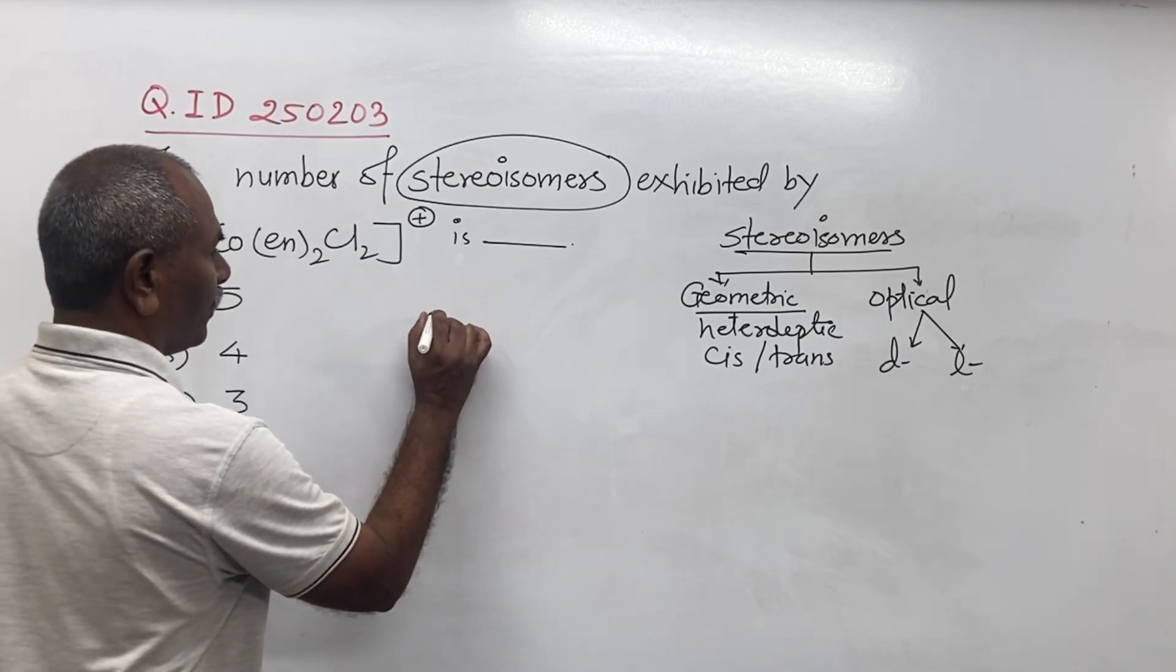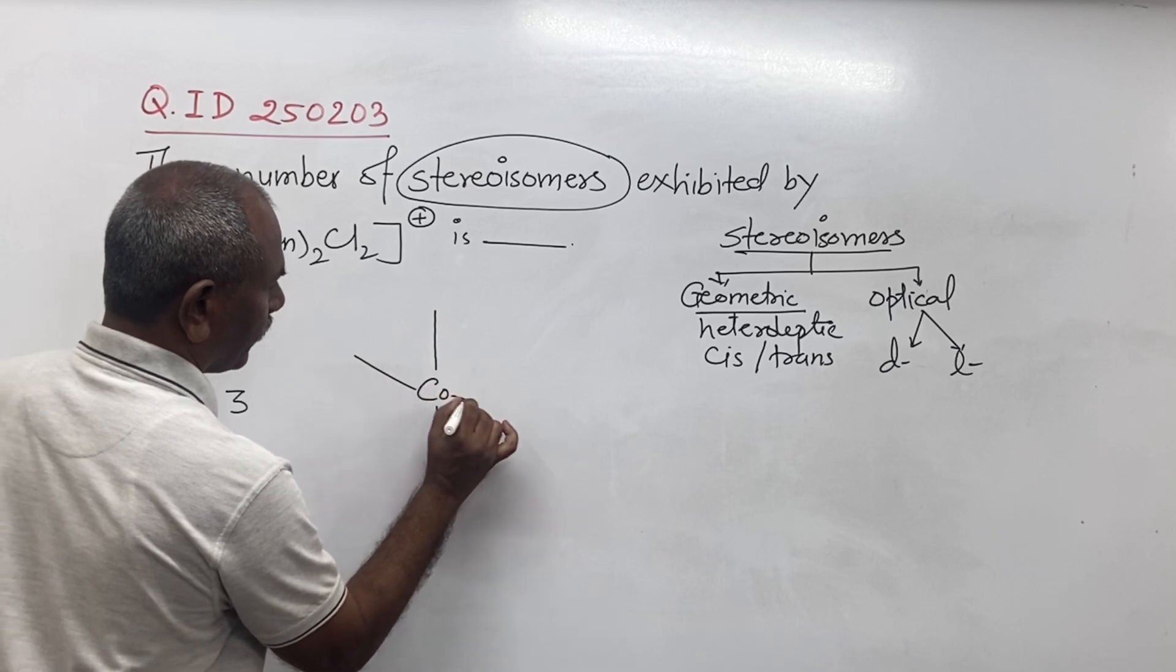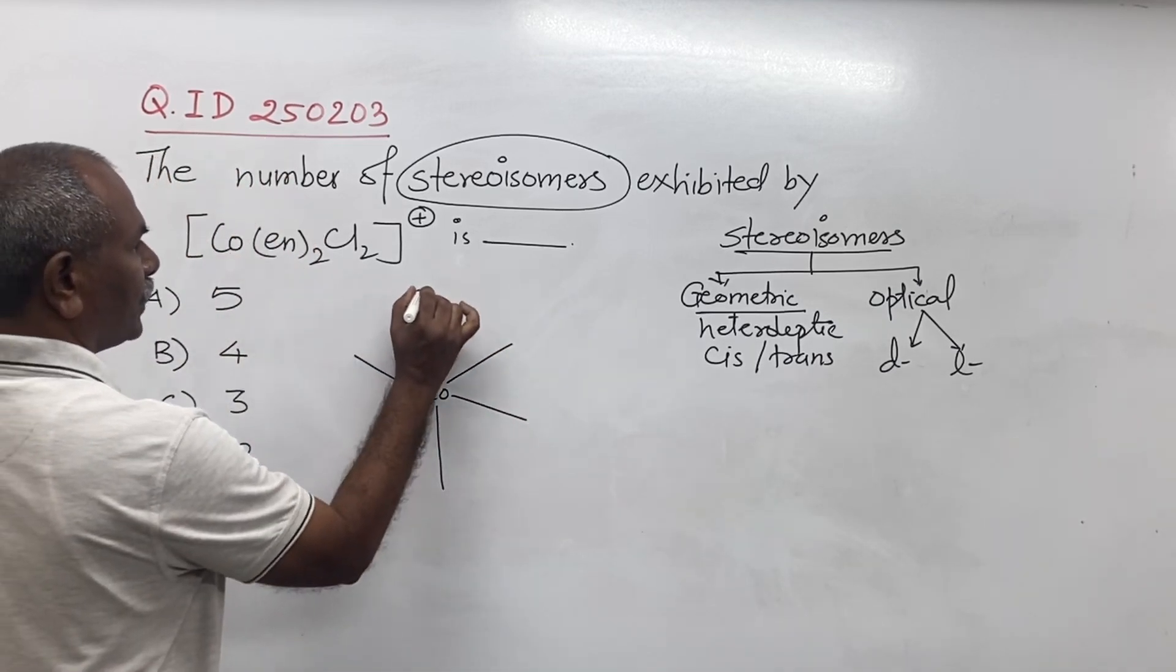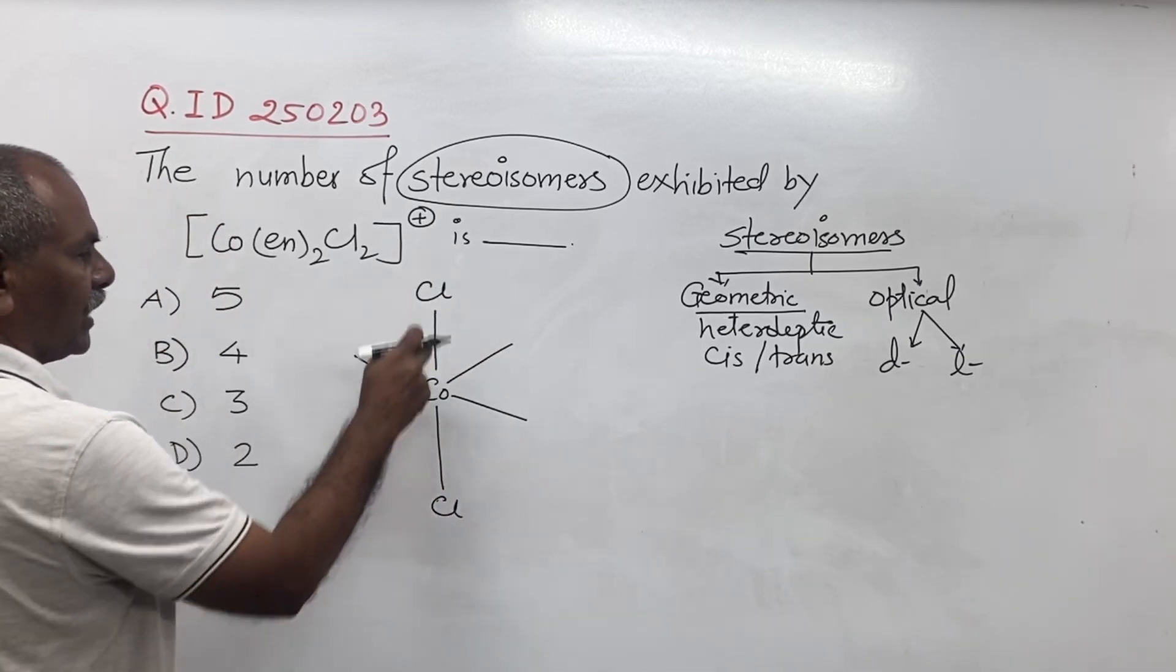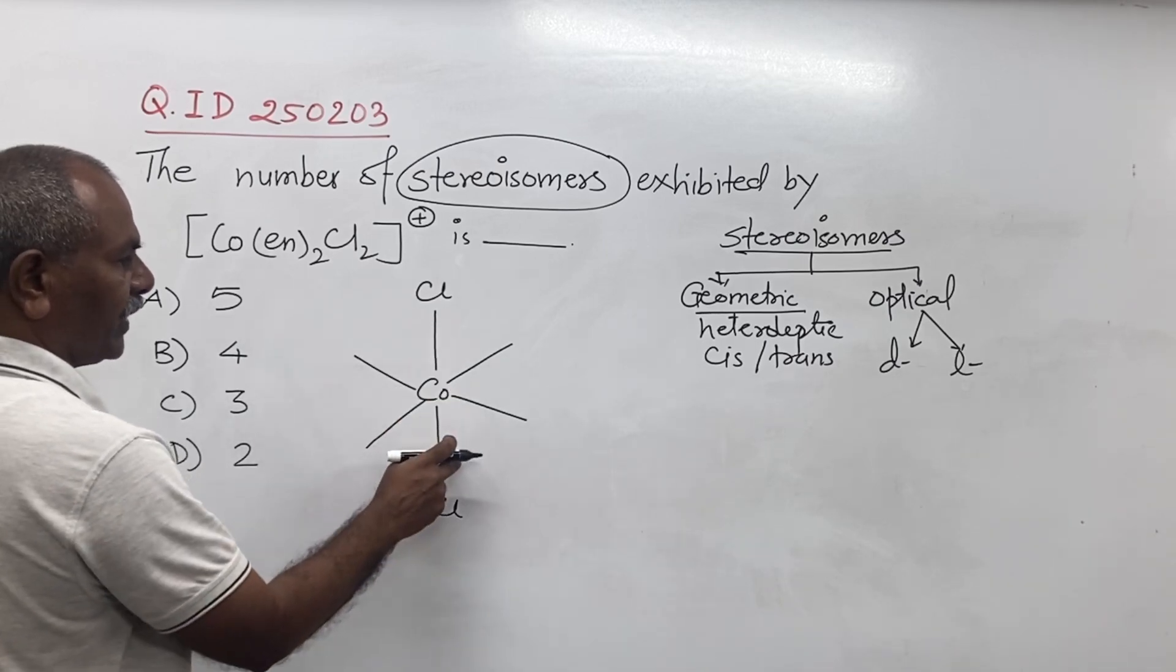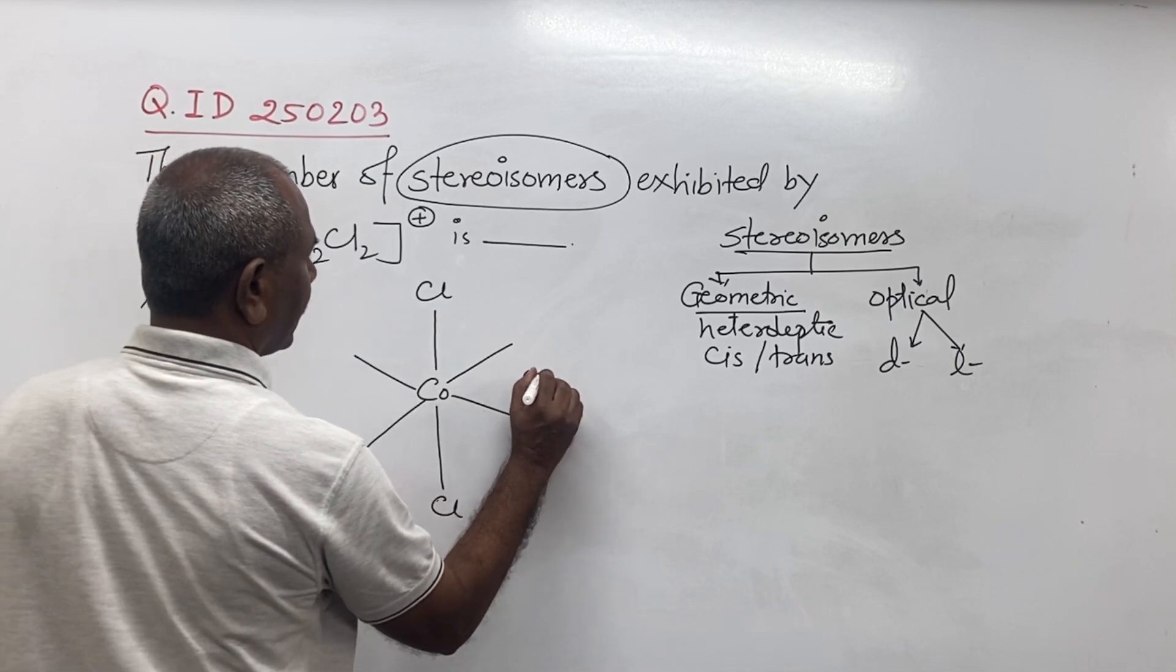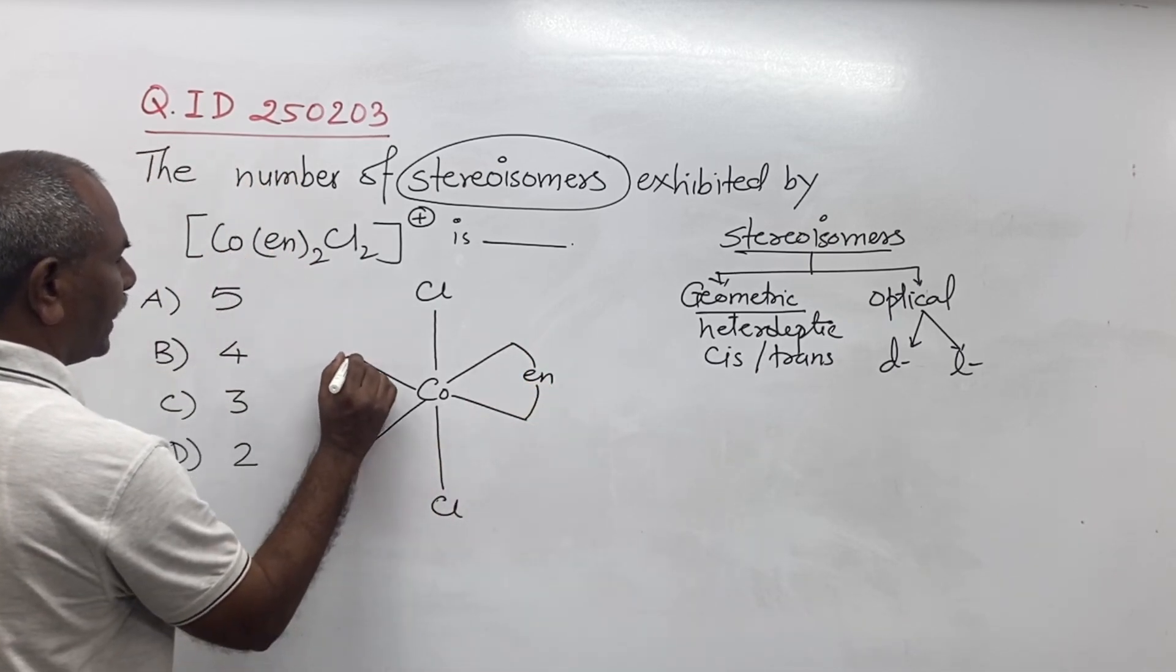So here first you write Cl and Cl, both are in opposite direction, so it is the trans isomer. The angle between two is 180 degrees. So you write here en, it is a bidentate ligand. This is trans isomer.